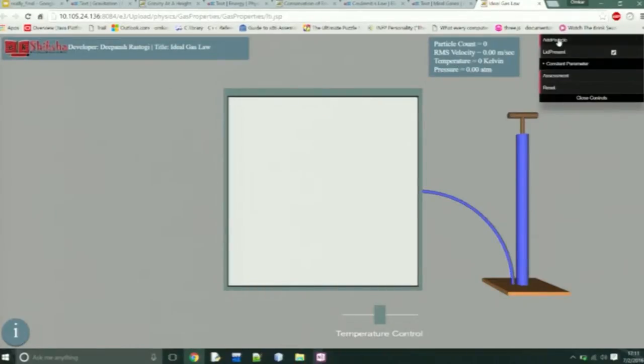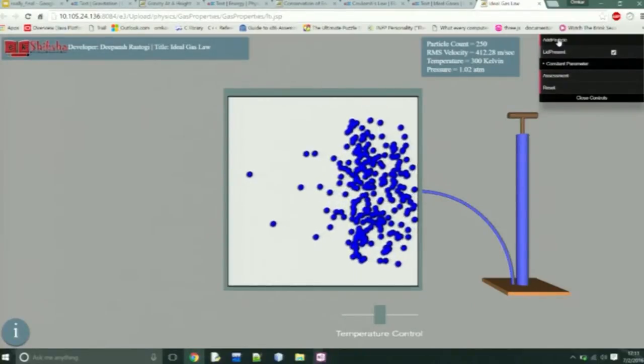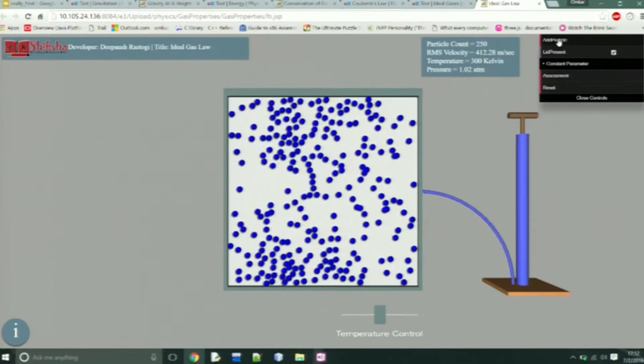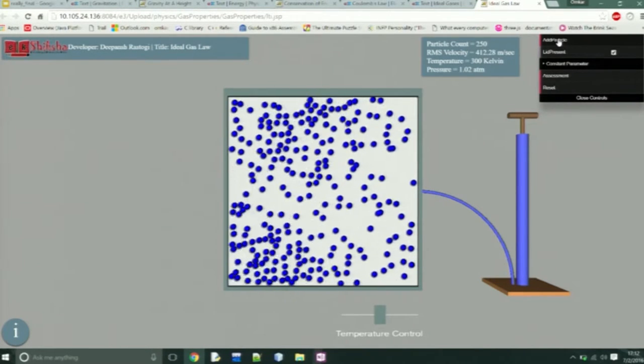If we click here, you will be able to add particles. It's a simulation I added so that you understand from where the particles are coming. As you can see the values of those parameters like particle count, RMS velocity, temperature, and pressure, they adjust accordingly.